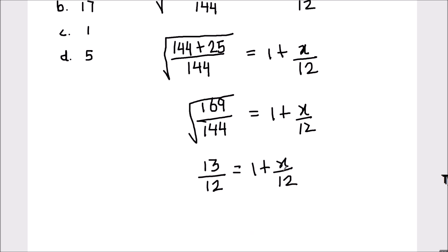Now, as we are finding the value of x, we'll leave x upon 12 on the right hand side and we'll transpose 1 to the left hand side. So that's going to be 13 by 12 minus 1 equals x upon 12.